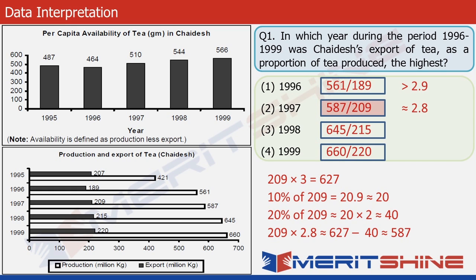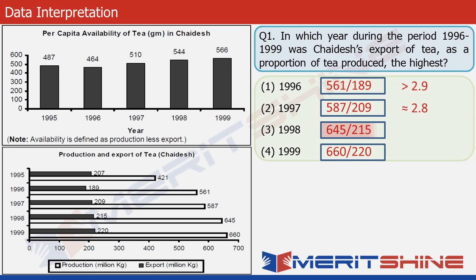For the third ratio 645/215: 215×3 = 645 exactly, so it's 3.0. The last ratio 660/220 is also exactly 3.0. We needed to find the smallest of the four reversed fractions. The second value (587/209 ≈ 2.8) is clearly the smallest, so the answer is option 2 — the year 1997 had the highest export as a percentage of production.